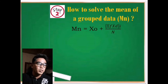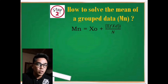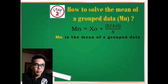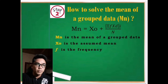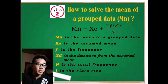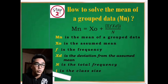Of course we need the formula. The formula is: Mn equals x-sub-zero plus the summation of the product of the frequency and the deviation, times the class size, over the total number of population. The terms are: Mn is the mean of grouped data, x-sub-zero is the assumed mean, f is the frequency, x-sub-d is the deviation from the assumed mean, n is the total frequency, and i is the class size.